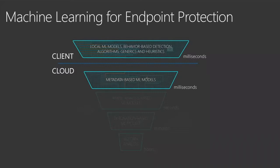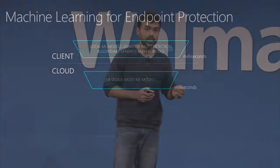Machine learning on the client is also very useful for catching commodity threats that are high in volume, where attackers are sloppy and don't use heavily obfuscated techniques. For more sophisticated attacks, we tend to move to cloud-based models since they are more difficult to evade. There are multiple levels of machine learning on the cloud as well. The first being metadata-based labels, where the client examines behaviors and patterns, collects signals — thousands of attributes — and sends them to the cloud, which runs them against its arsenal of cloud-based models, providing a verdict within milliseconds.